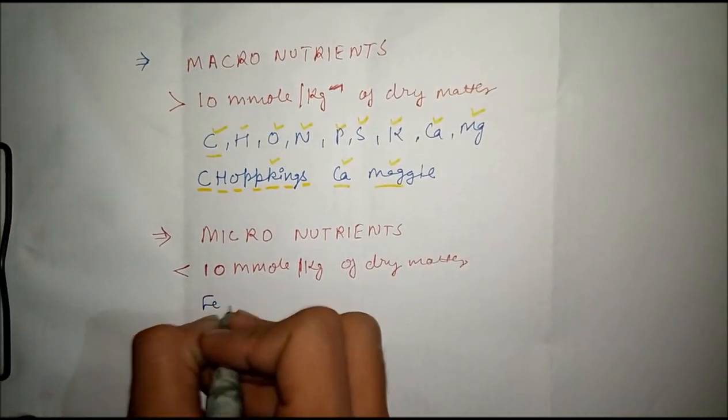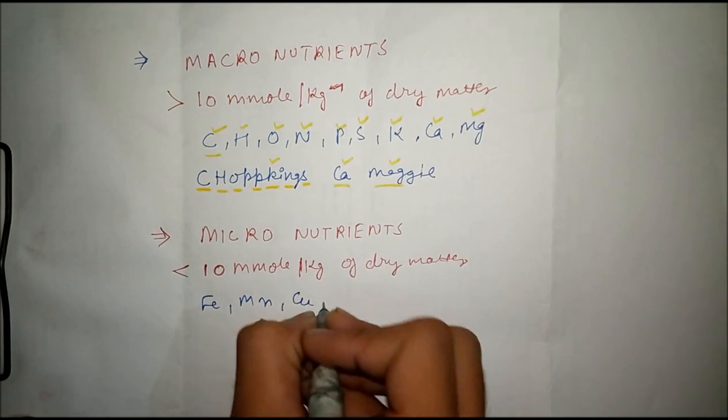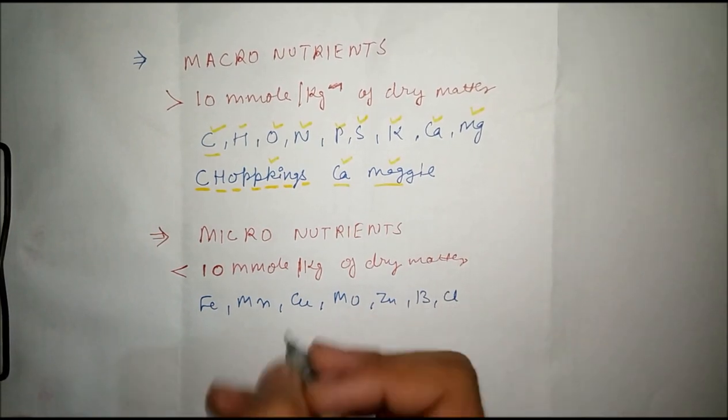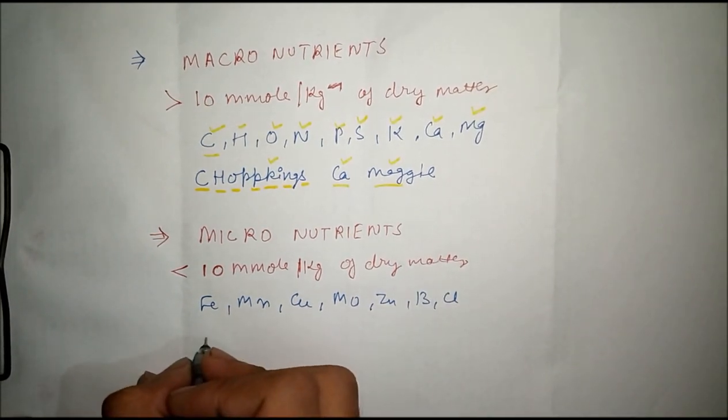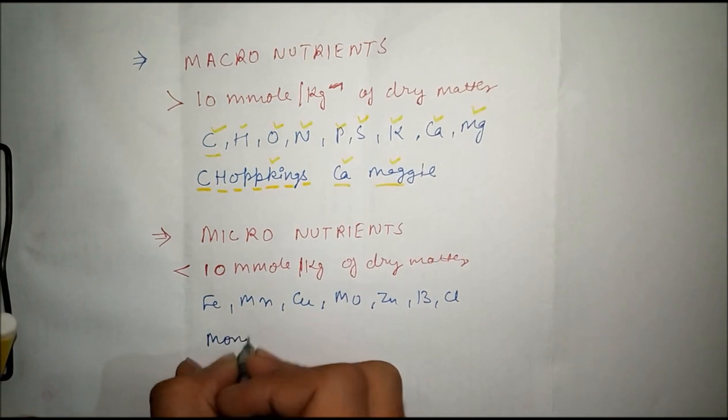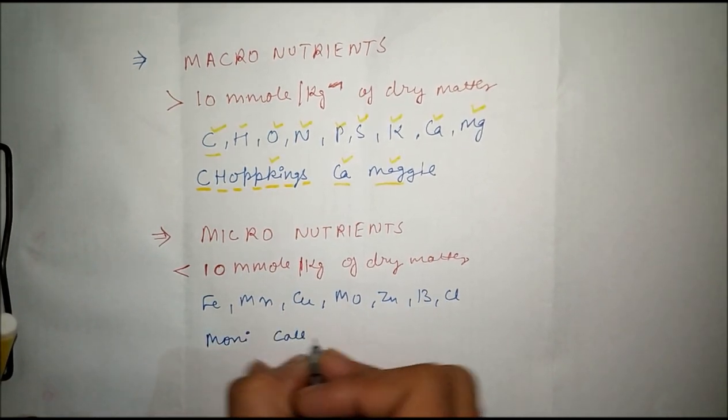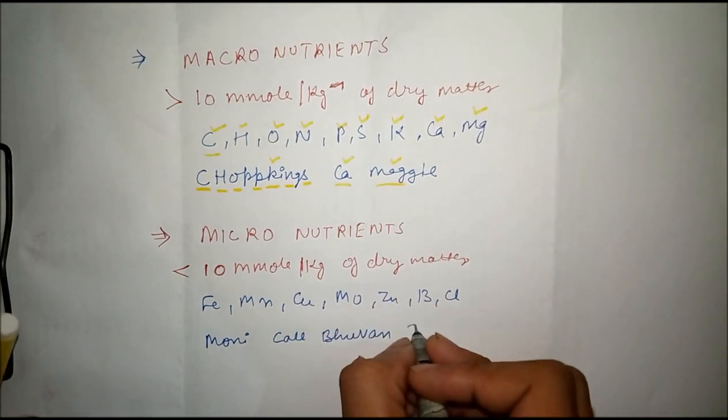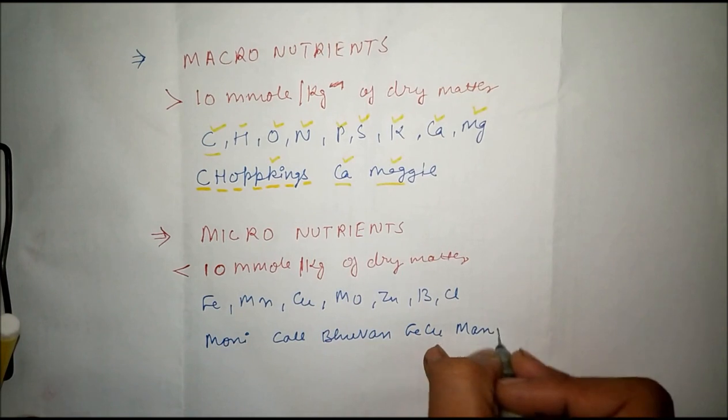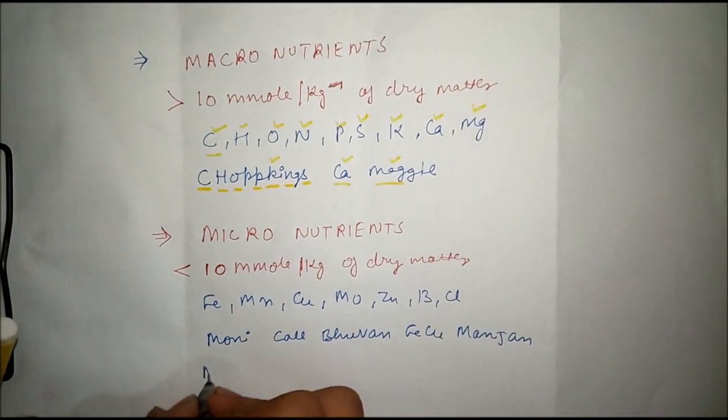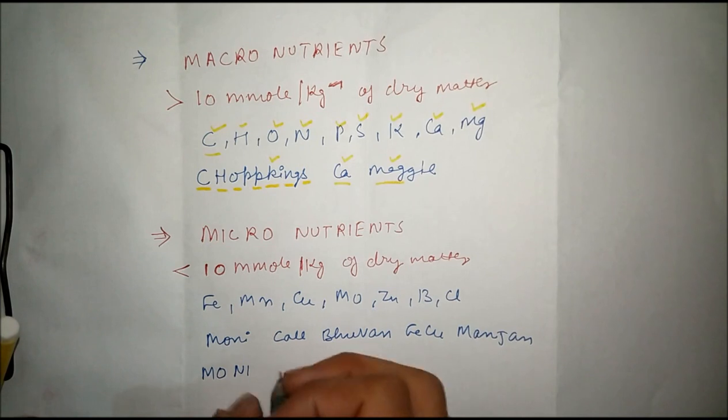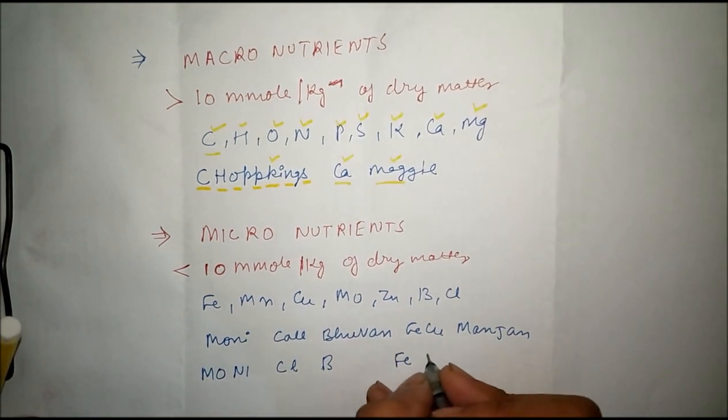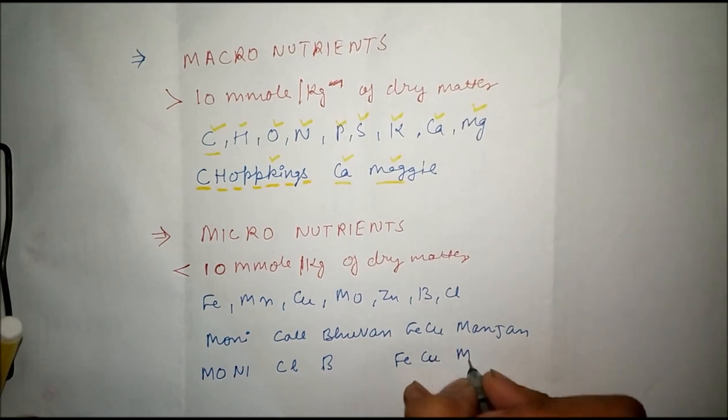The elements present are iron, manganese, copper, molybdenum, zinc, boron, chlorine. The formula is 'Moni called beer mom' - Mo and Ni (molybdenum, nickel), Cl (chlorine), B (boron), Fe, Cu (iron, copper), Mn, Zn (manganese, zinc).